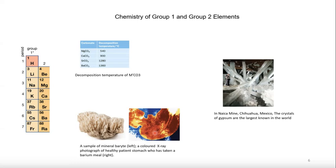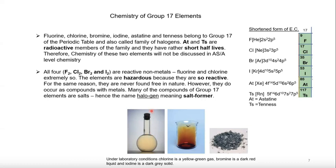We now move to another group of elements in the syllabus — group 17, called the halogens. The members are fluorine, chlorine, bromine, iodine, astatine, and tennessine. These are the elements of halogen group 17 in the periodic table.